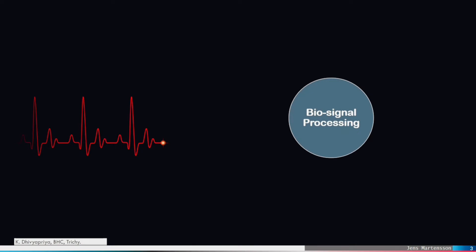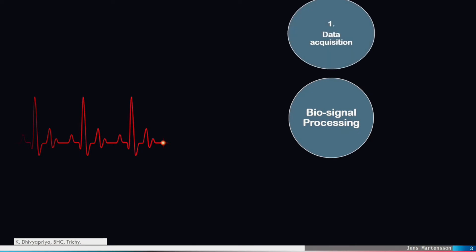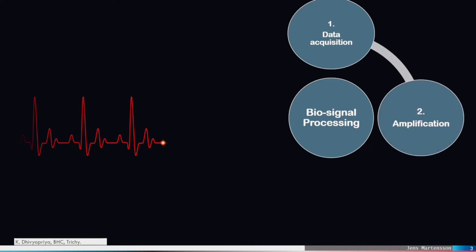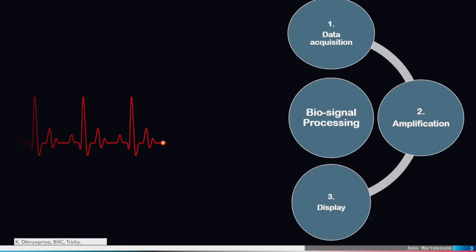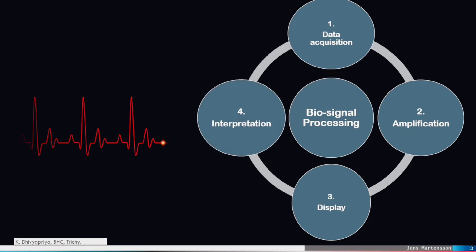Biosignals are material carriers of the information about the state of the biological system. Therefore, they can be processed by four steps as I have shown here. The first step will be the data acquisition process. The second step will be the amplification process. The third step will be the display and storage of signals, and the final step will be the interpretation of the biosignals.